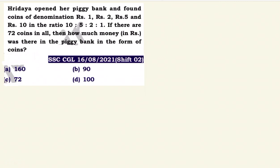Next question: Hirudaya opened her piggy bank and found coins of denomination rupees 1, rupees 2, rupees 5, and rupees 10, in the ratio 10 is to 5 is to 2 is to 1. If there are 72 coins in all, then how much money was there in the piggy bank?